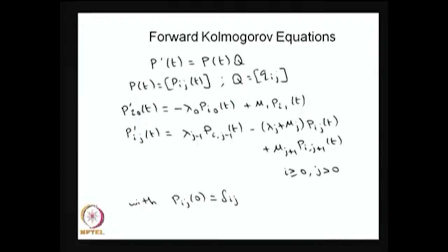For the first equation, P'(i,0) corresponds to the system not moving from state 0, so we have minus lambda-naught times the probability, and the system can come from state 1 with rate mu-1, giving plus mu-1 times P(i,1) of t. For all other equations, either the system comes from the previous state with rate lambda_{j-1}, or from the forward state with rate mu_{j+1}, or it does not move anywhere. So with these three possibilities you have three terms on the right-hand side, representing the net rate for any state j.